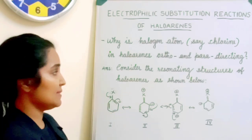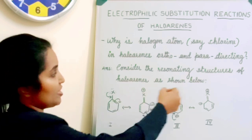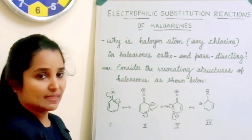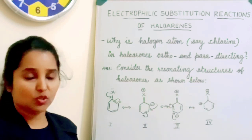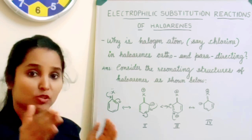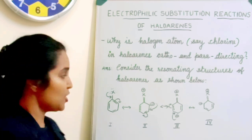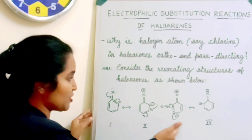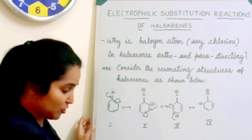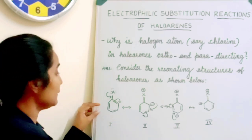The answer is: consider the resonating structures of haloarenes as shown below. I have drawn the resonating structures — four resonating structures are here, as you can see.